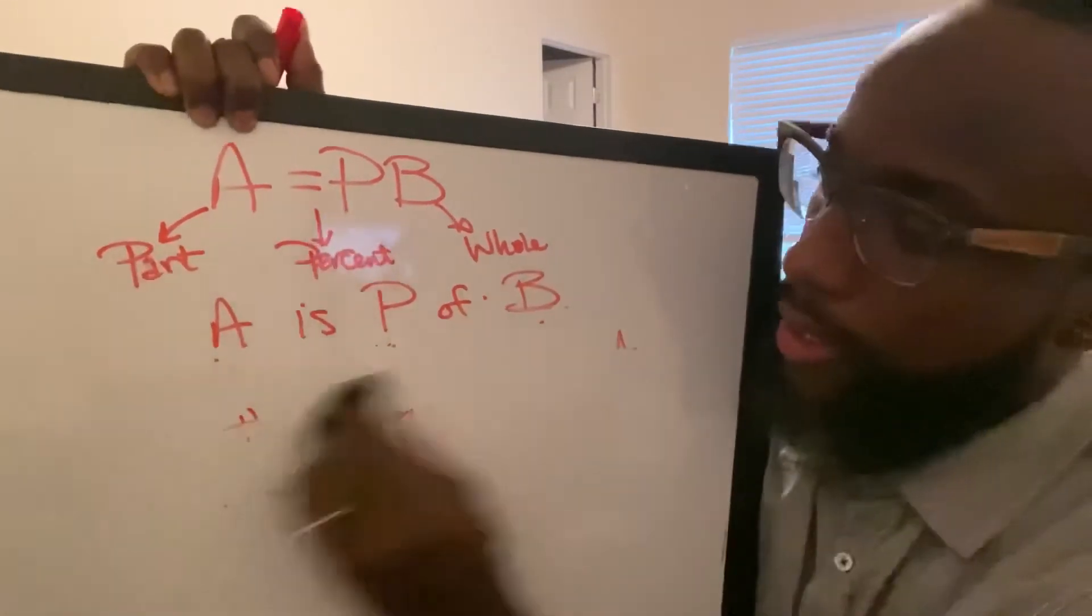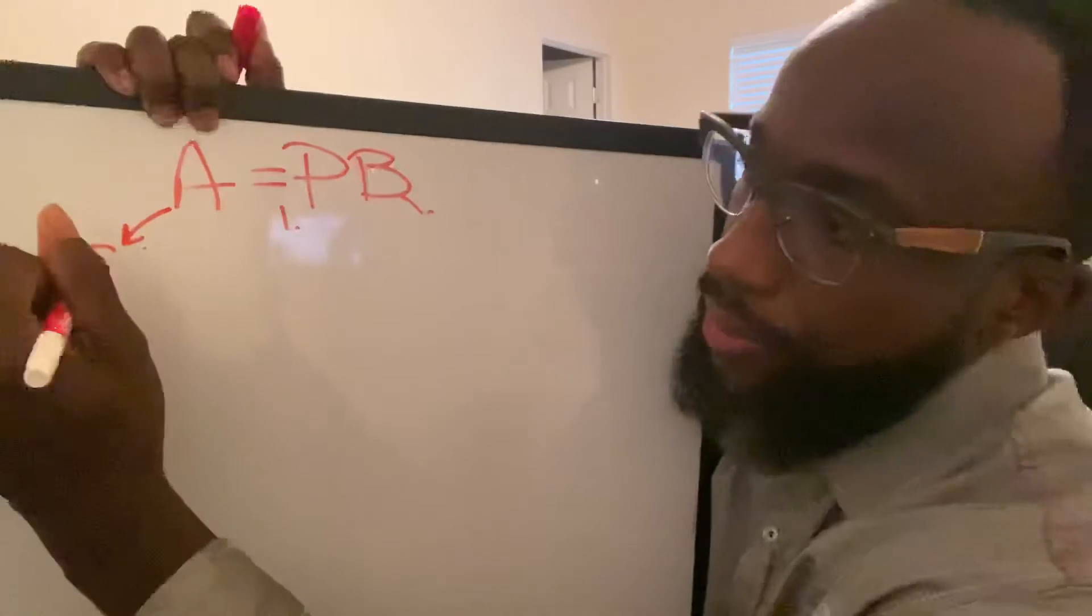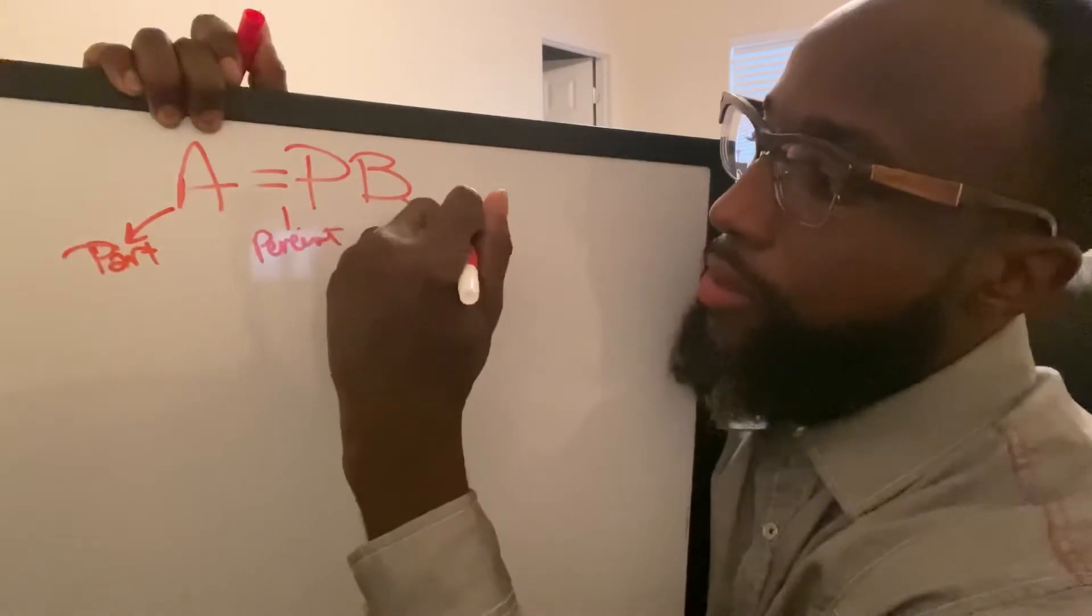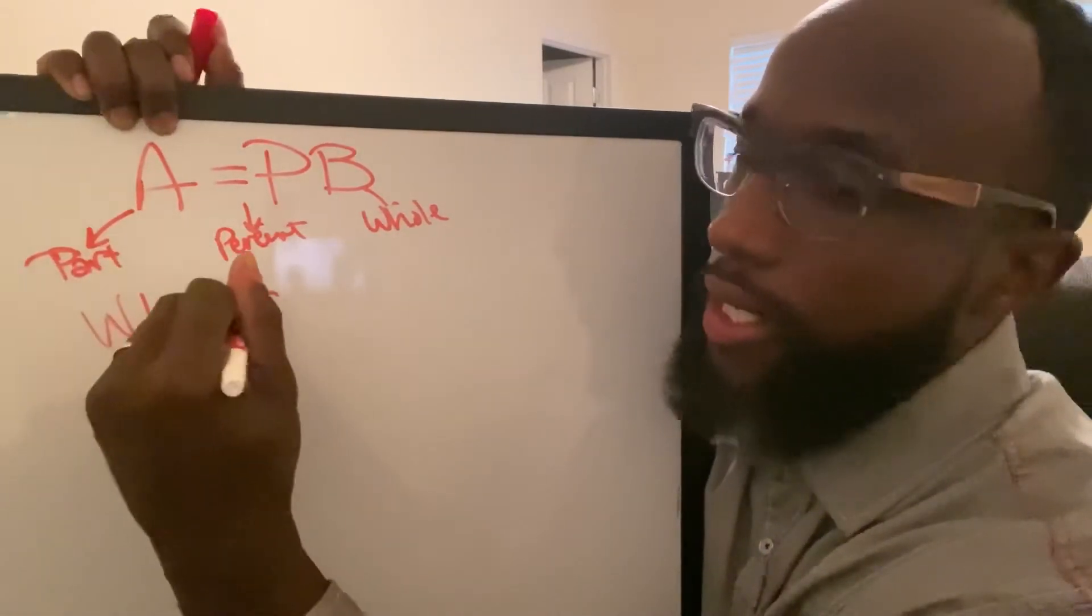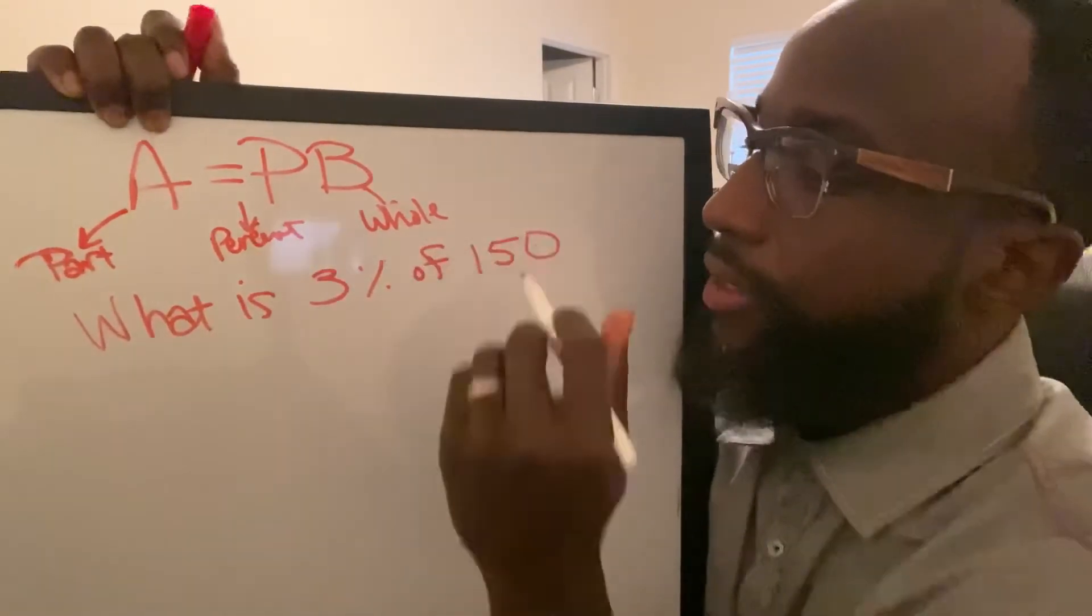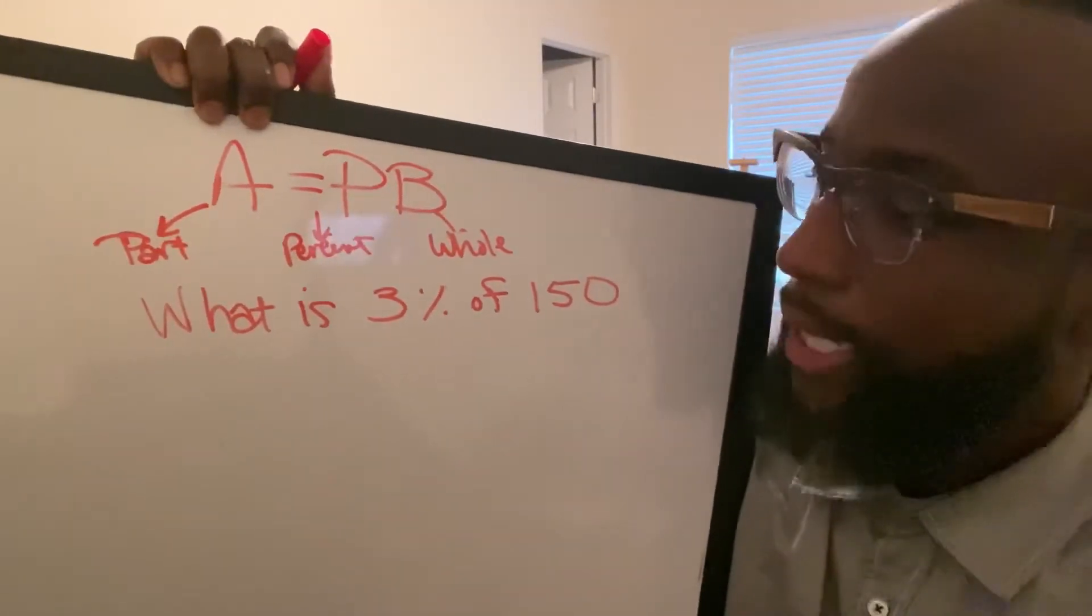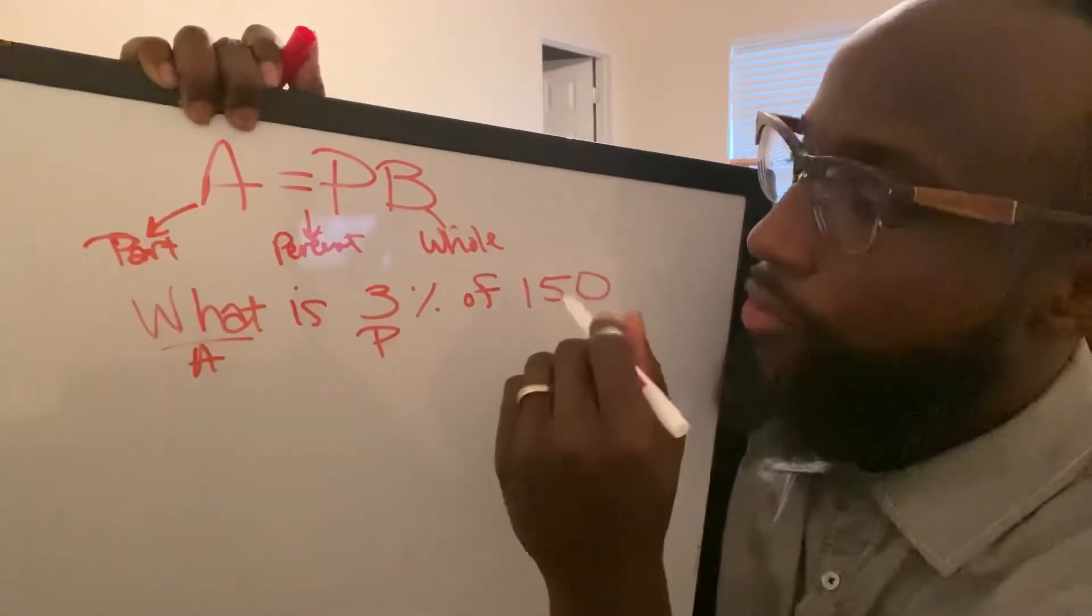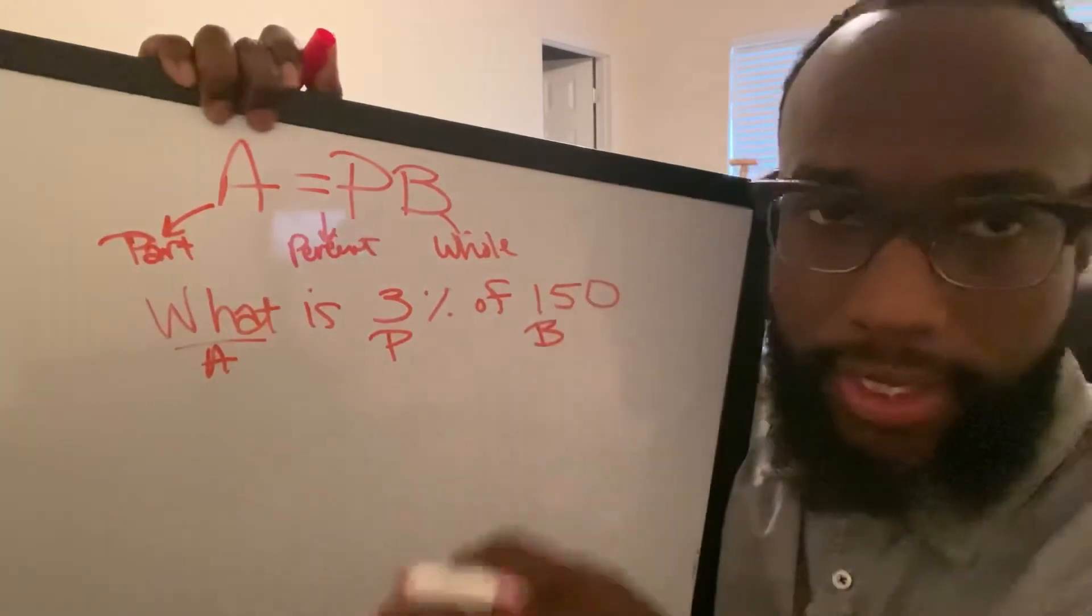Here we go. We're going to keep this APB up here - part, percent, whole. Let's look at the problem. What is 3% of 150? What is the A? We don't know it. 3% is the P. 150 is the B, that's the whole number. With that regard, let's break the equation up.